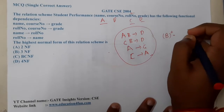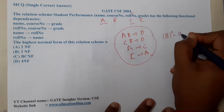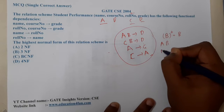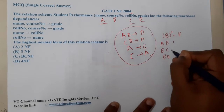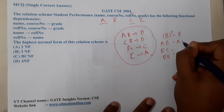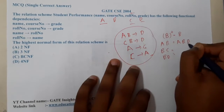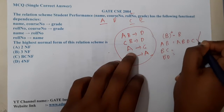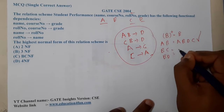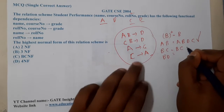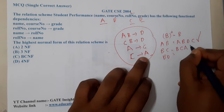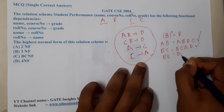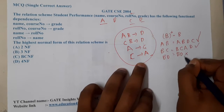Using B alone we can only get B, so B alone is not a candidate key. Let us try combinations: AB, BC, BD. From AB: we get AB, then D from AB → D, and C from A (since AC appears), so AB closure = {A, B, C, D} — AB is a candidate key. For BC: from BC we can find A (via AC → A), then from AB we get D, so BC closure = {A, B, C, D} — BC is also a candidate key. BD does not yield all attributes.